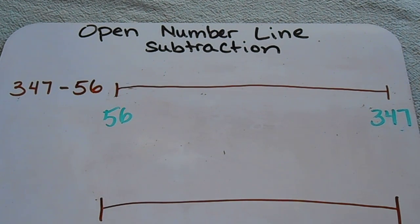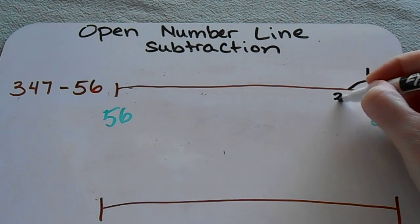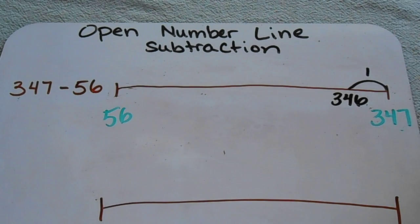All this method does is show you different jumps that you make to get down to 56. So for example, my first jump is going to be worth one unit and that's going to put me at 346. I'm recording my jumps up here at the top and then my new numbers down here underneath the number line.